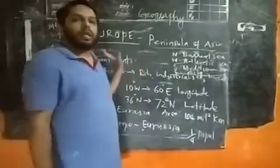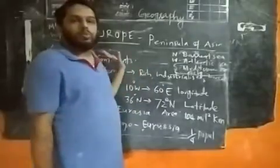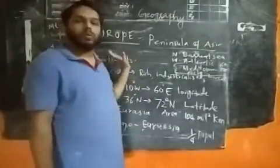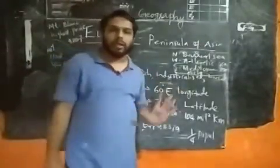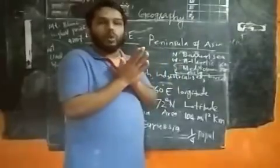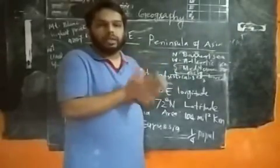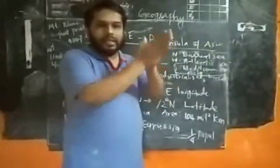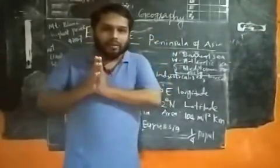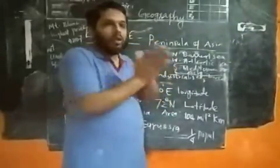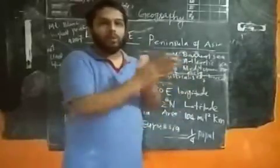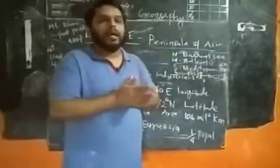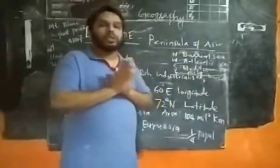What is the barrier between Europe and Asia? There is a huge mountain called the Ural Mountains. The Ural Mountains divide Europe and Asia — that is the boundary between Europe and Asia.